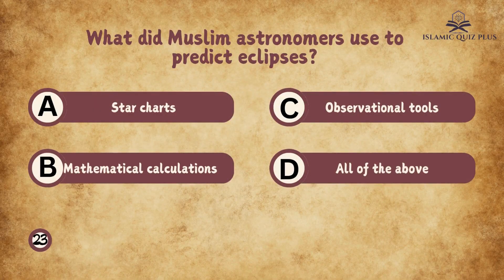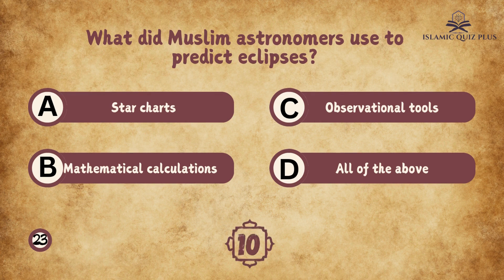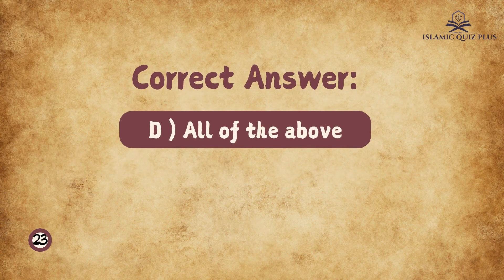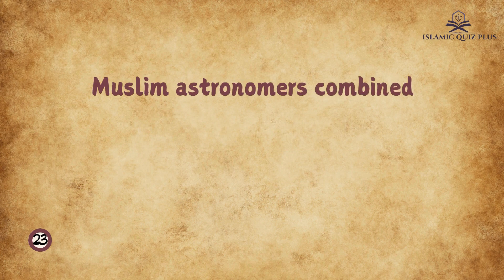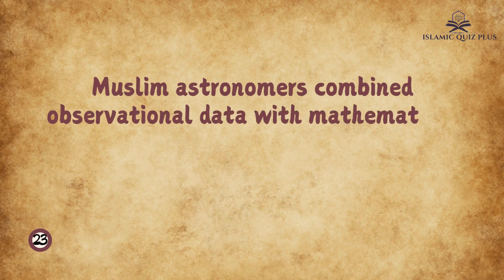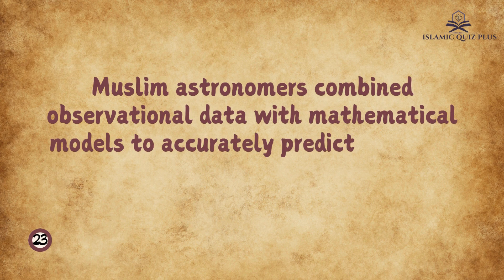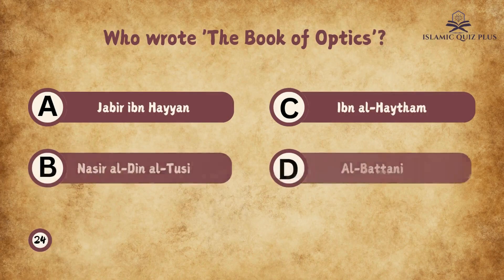Question 23: What did Muslim astronomers use to predict eclipses? A. Star charts, B. Mathematical calculations, C. Observational tools, D. All of the above. The correct answer is D. All of the above. Muslim astronomers combined observational data with mathematical models to accurately predict celestial events.